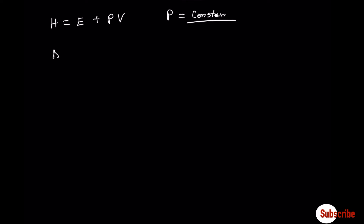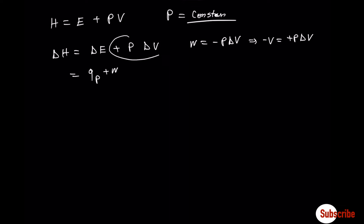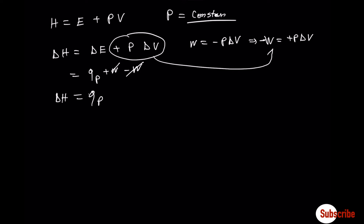Now an example dealing with enthalpy. Enthalpy equals internal energy plus the product of pressure and volume, and it operates at constant pressure. Change in enthalpy equals change in internal energy plus P·delta-V. Since work equals minus P·delta-V, the terms cancel, and change in enthalpy at constant pressure equals the heat that evolves from the reaction.